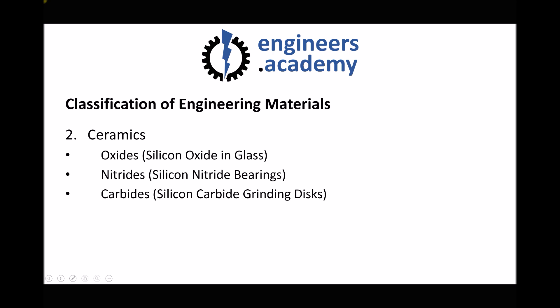Next we have nitrides. A good example of a ceramic nitride is silicon nitride, which can be used for functions such as bearings where two surfaces are rubbing together and we don't want one surface to wear the other. Finally we have carbides — a typical application of silicon carbide would be grinding discs in an angle grinder. Again, a very hard material made of a combination of silicon and carbon.